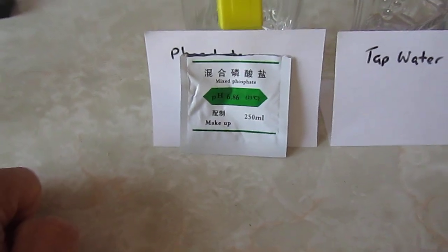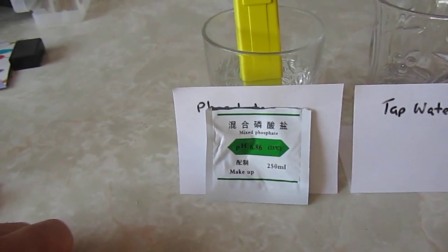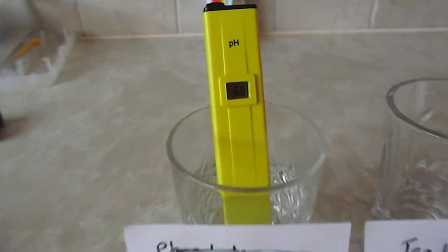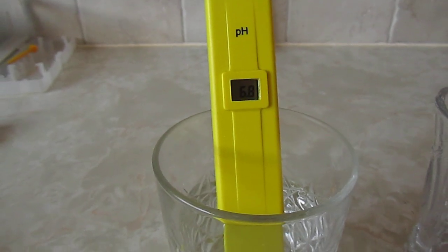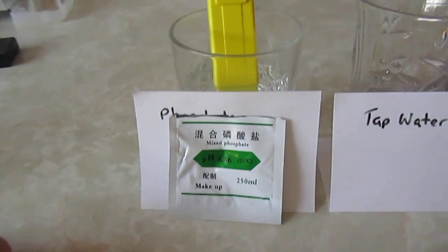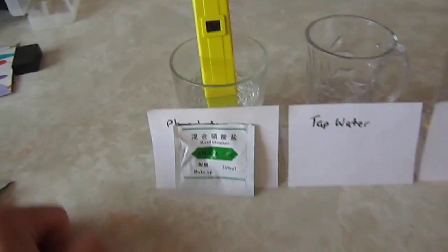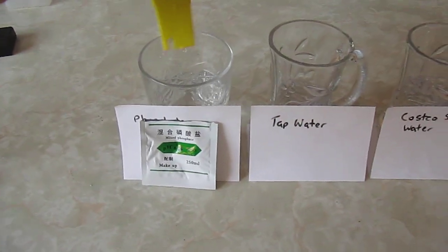So this is just some phosphate that came with the thing to calibrate it and you can see here it's 6.8, just to calibrate the pH meter.